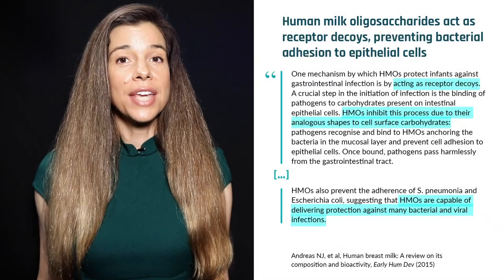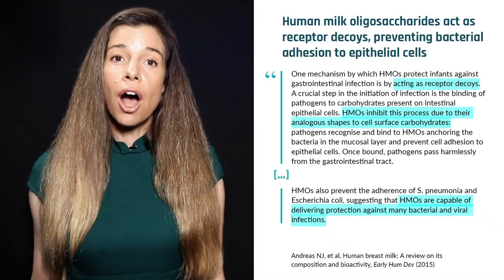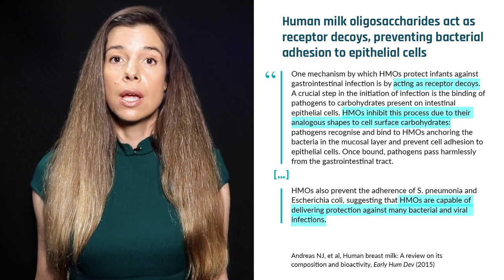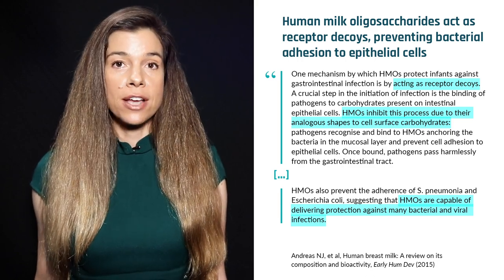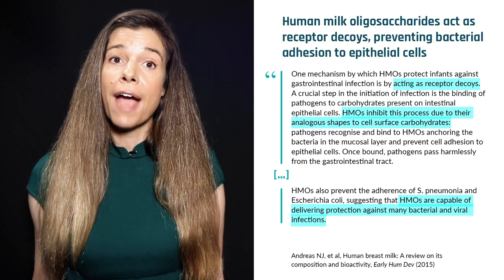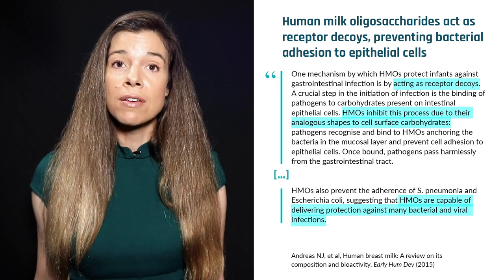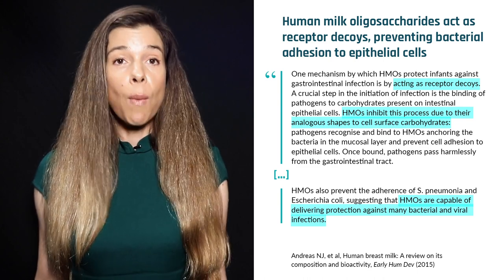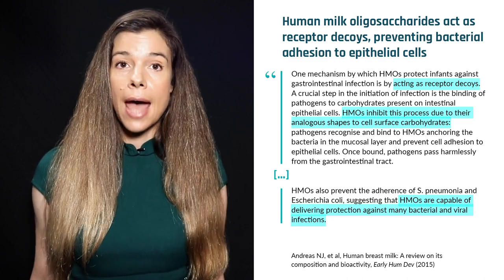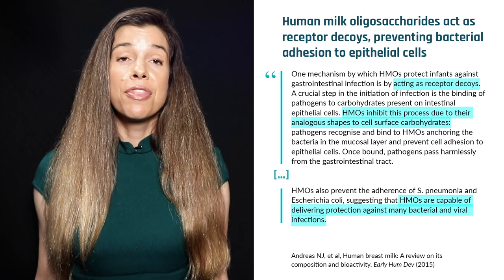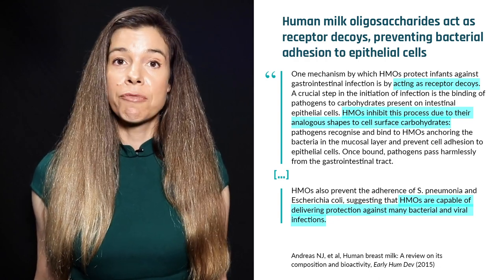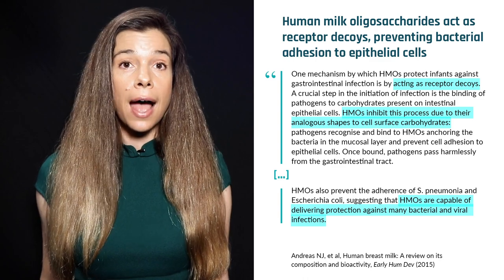But that's not the end of the story of HMOs. They also serve as decoys to protect the infant from gut infections. In order for bad bacteria to cause infection, they must first target and bind to specific carbohydrates found on the cells that line the gut. However, the overall structure and shape of HMOs mimics that of bacterial targets. The bad bacteria bind to the HMOs instead, preventing them from establishing themselves in the gut.